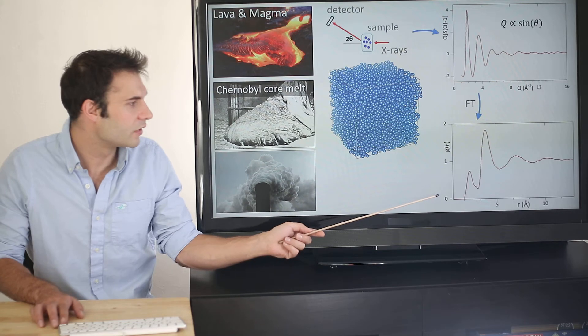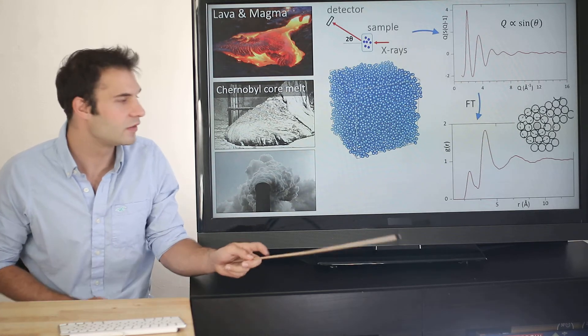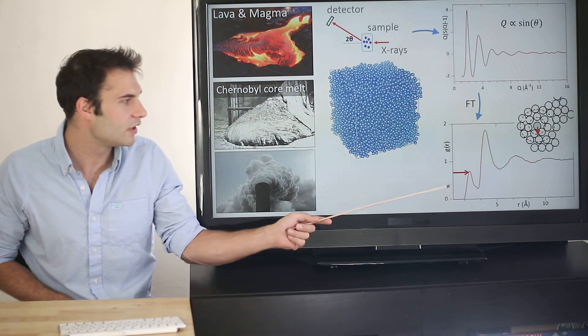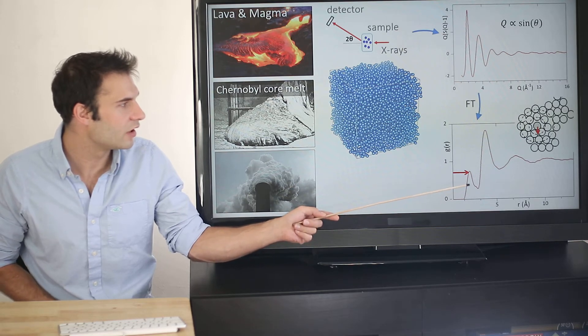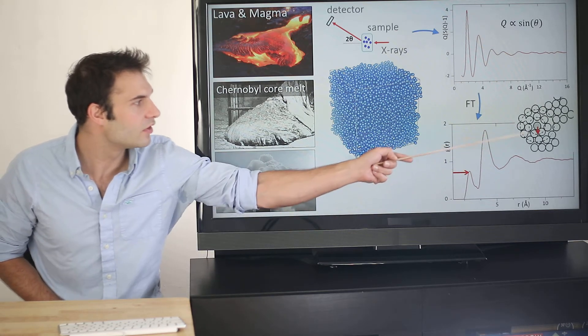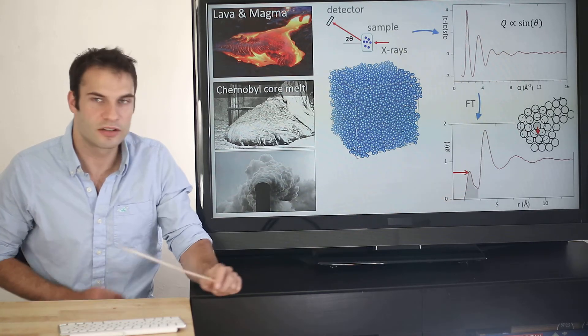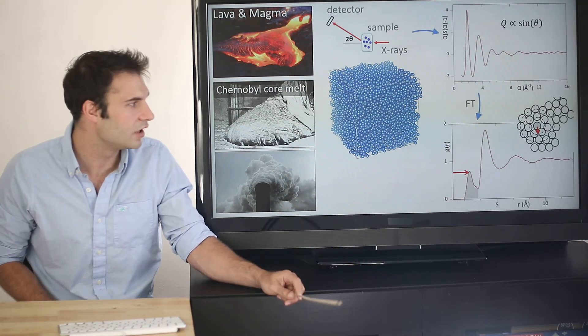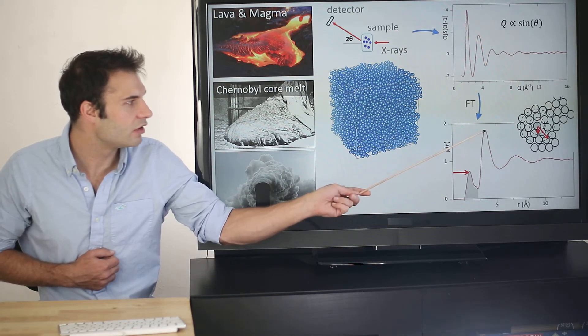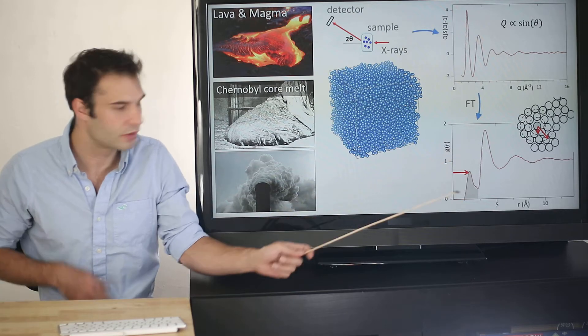This pair distribution function, the y-axis, describes the probability of finding an atom a separation r from another atom. If you imagine if you sit on an atom and look around you, immediately there's no probability of finding an atom because there's a finite separation between the atoms. Then for molten uranium dioxide, there's a first peak at 2.2 angstrom, which corresponds to the nearest neighbor separations. In this case, it's the separation between uranium and oxygen. This uranium-oxygen peak, and we can integrate to get the area under the peak, tells us the number of oxygens around each uranium on average. Then we can look further, and we get the uranium-uranium separation at around 3.88 angstroms.